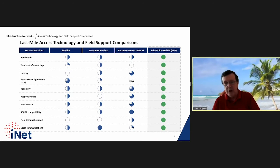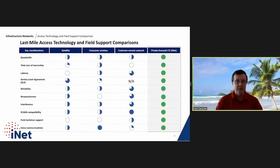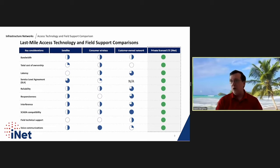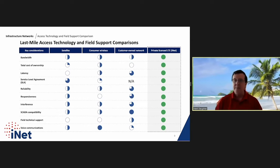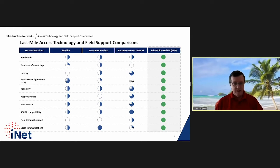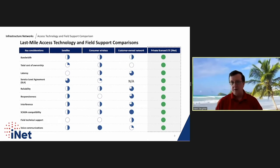How do you reach a remote site like a rig, well pad, or processing facility? You can do it by satellite, by consumer wireless networks — AT&T, T-Mobile, Verizon — which work better along highways or in major cities but not deep in the Permian or Bakken. Or you can build your own network, or tap into INET's private licensed 4G/5G LTE network backhauled by microwave and fiber. Considering bandwidth speeds, total cost of ownership, latency, SLA, and SCADA compatibility, we rank superior to most alternatives.